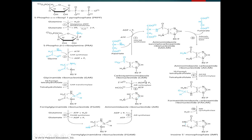After the formation of carboxyaminoimidazole ribonucleotide, or CAIR, it is then converted into aminoimidazole succinylcarboxamide ribonucleotide, or SAICAR, with the input of aspartate amino acid, energy, and the enzyme SAICAR synthetase.